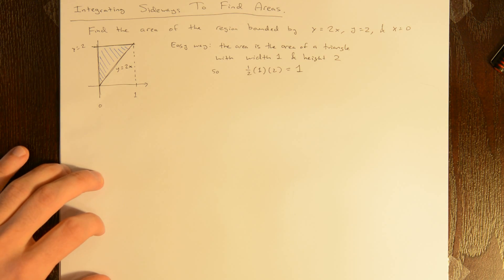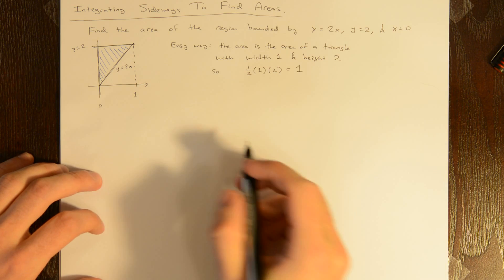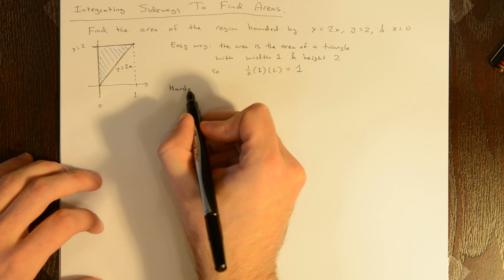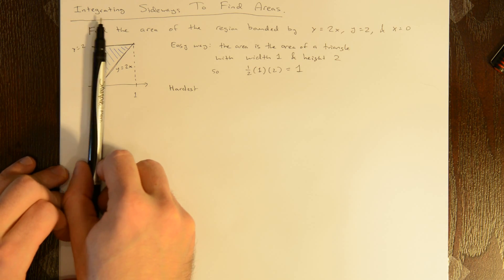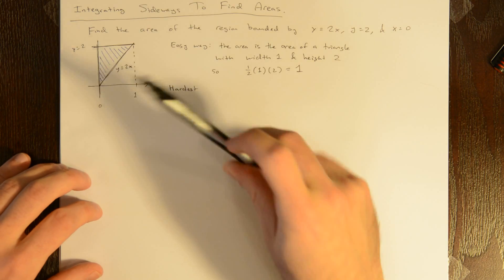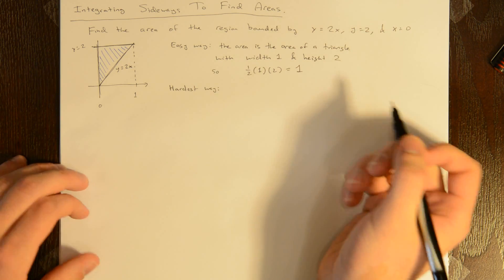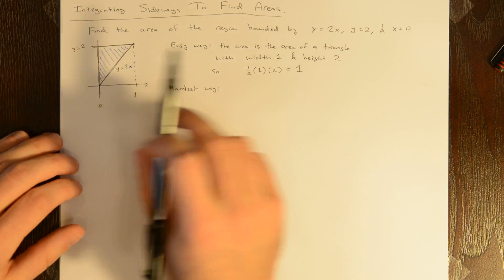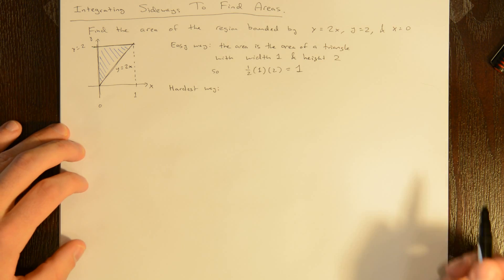The second easiest way is to integrate horizontally — we'll do that last. The hardest way is to do this the way you would normally do it, which is to integrate from the smallest x value of 0 to the largest x value of 1, using top function minus bottom function — the height of the shape — treating it as a standard vertical integral.